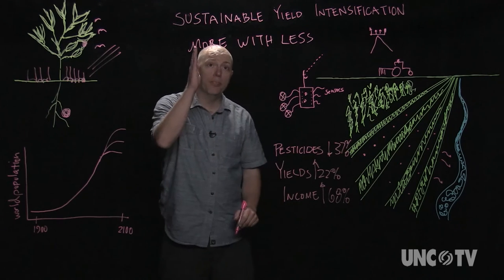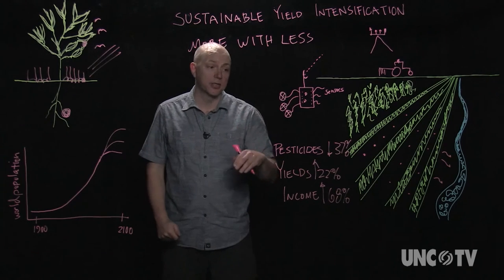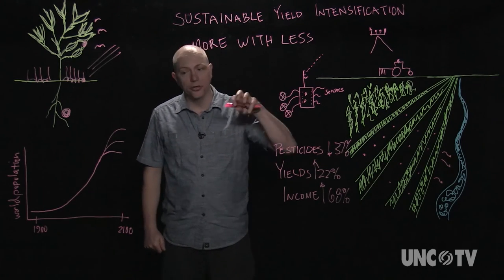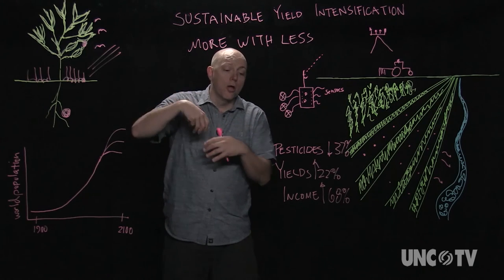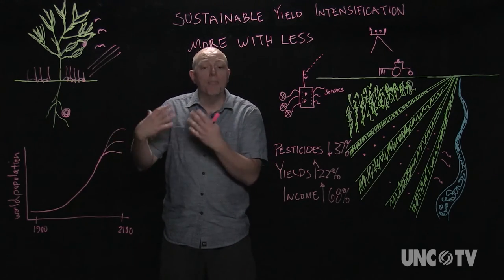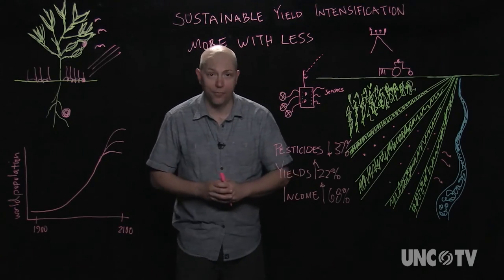So by promoting sustainable yield intensification and doing more with less, growing more crops on less land, we might actually contribute towards creating a more sustainable population size, which means a more habitable world for us all.